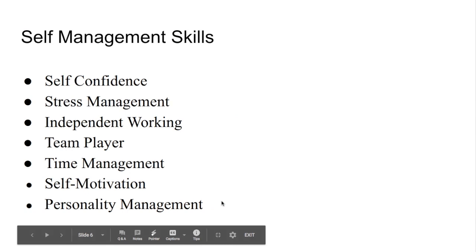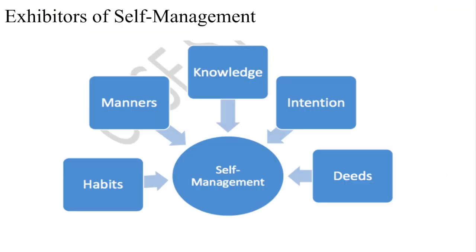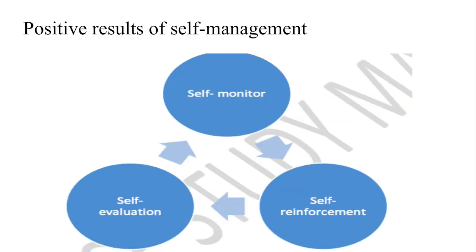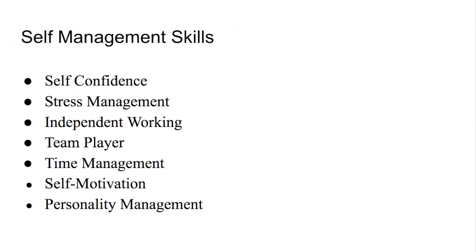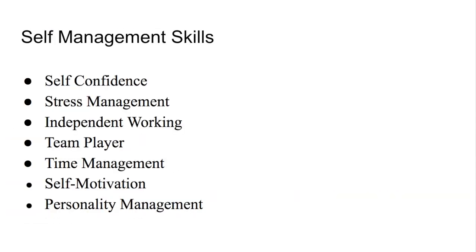Next are self-management skills. Till now we studied what self-management is, how it can be exhibited, what the key factors are, and the positive outcomes. Now we are learning how we can become a self-managed person — how to adopt self-management skills. The skills are: self-confidence, stress management, independent working, team player, time management, self-motivation, and personality management.